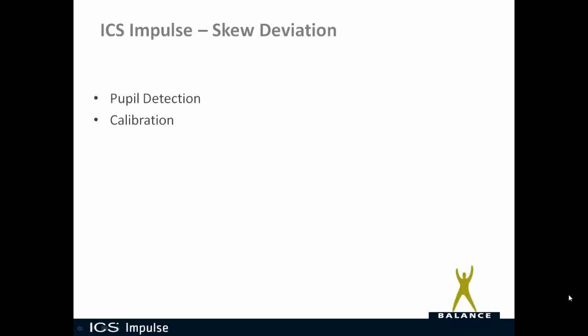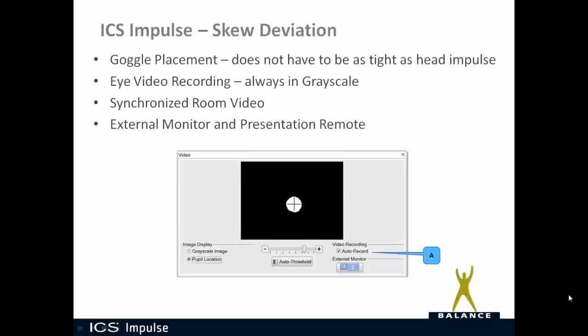Regarding pupil detection and calibration, those two topics are covered in separate videos. For goggle placement, the goggle does not have to be as tight as for head impulse. It needs to be tight enough so that it stays in place, but if you're not moving the head, it does not need to be as tight as it does for head impulse.